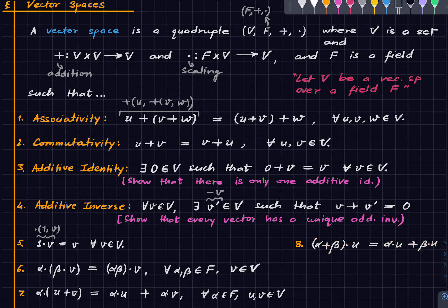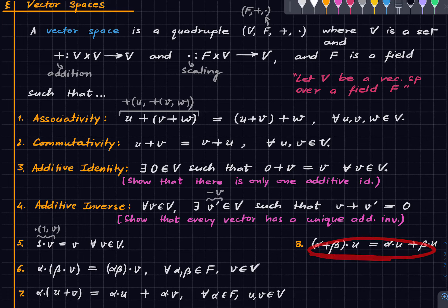The eighth axiom is another distributivity property: (α + β)·u = α·u + β·u, where the left-hand plus is in the field and the right-hand plus is in the vector space. In the R² example, scaling a vector by (1 + 1) = 2 is the same as scaling by 1 twice and adding. These eight axioms define a vector space.